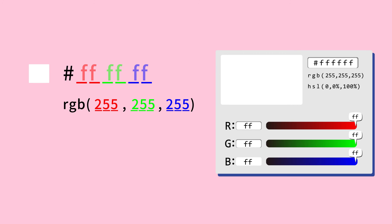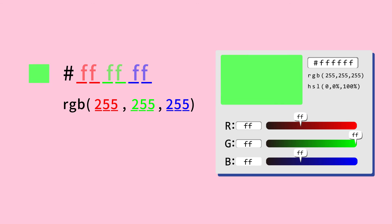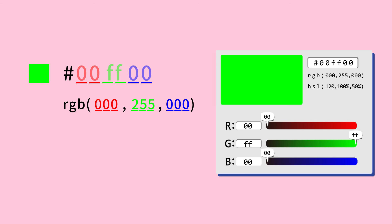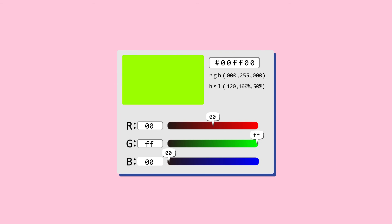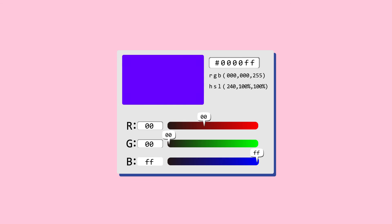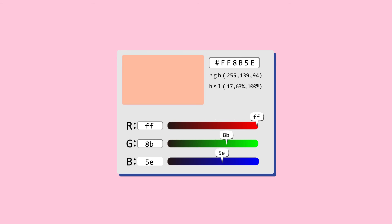What about green? Leave red and blue at zero and green at its fullest, and this will give you a bright green. The hex value is 00 FF 00. This is how over 16 million colors are represented on digital devices. This is amazing!